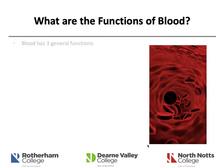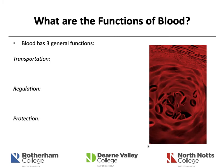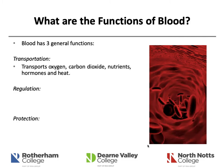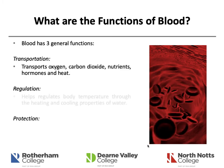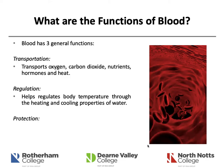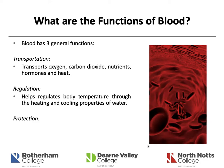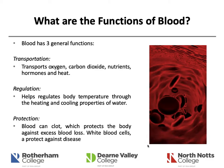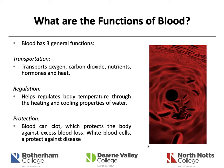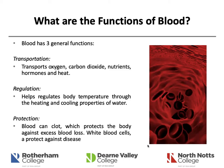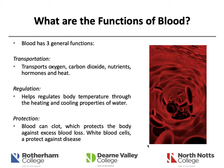What are the functions of blood? Blood has three general functions: transportation, regulation, and protection. Blood transports oxygen, carbon dioxide, nutrients, hormones, and heat. In terms of heat specifically, blood helps regulate body temperature through the heating and cooling properties of water, one of the main components of blood plasma. Blood can also clot, protecting the body against excess blood loss and haemorrhaging, and white blood cells and antibodies help protect against disease.